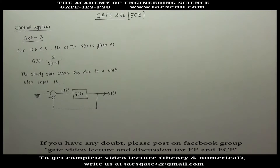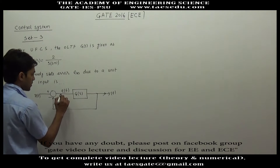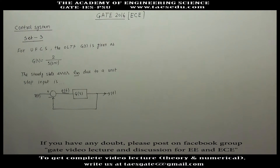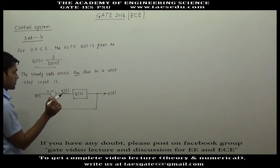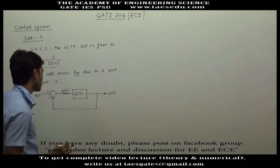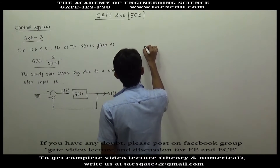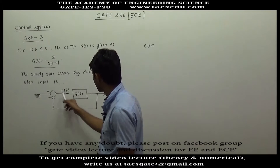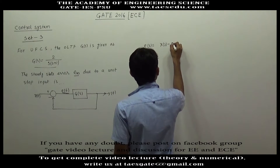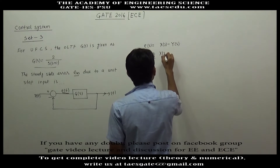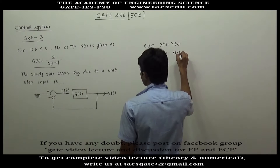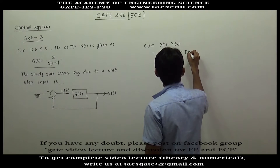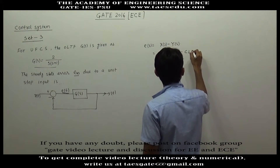Now we have to find out the steady-state error E_ss. G(s) is the given open-loop transfer function. The steady-state error, or the Laplace of steady-state error E(s), will be the Laplace of input minus Laplace of output: X(s) minus Y(s). Y(s) equals X(s) into the closed-loop transfer function.